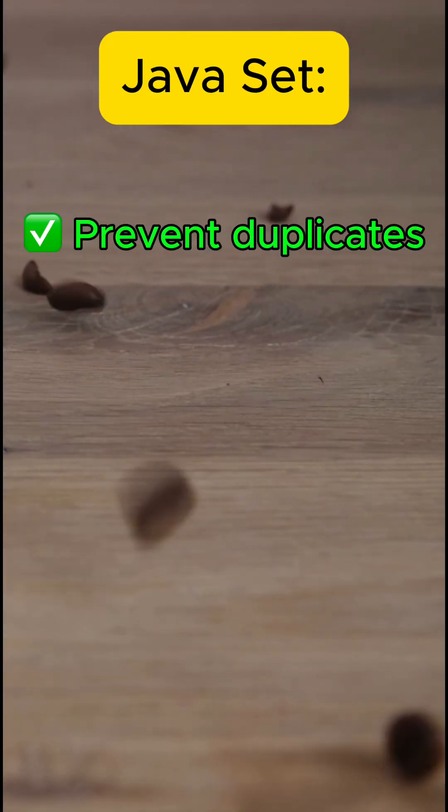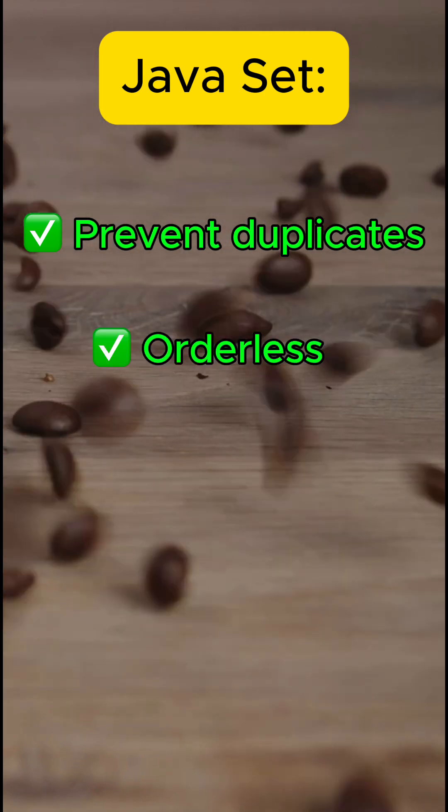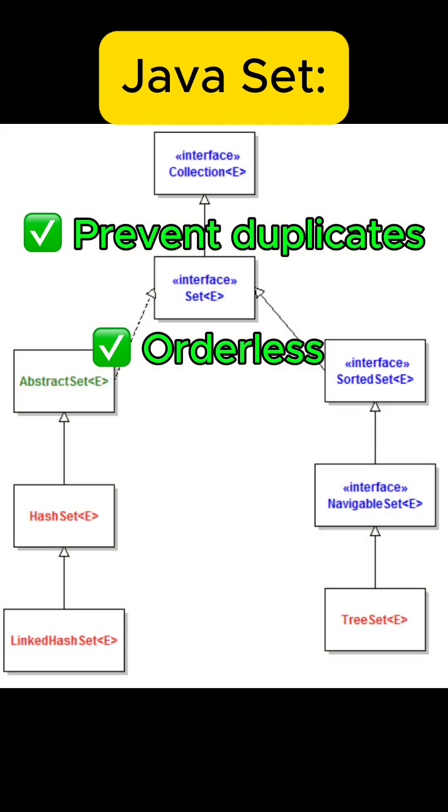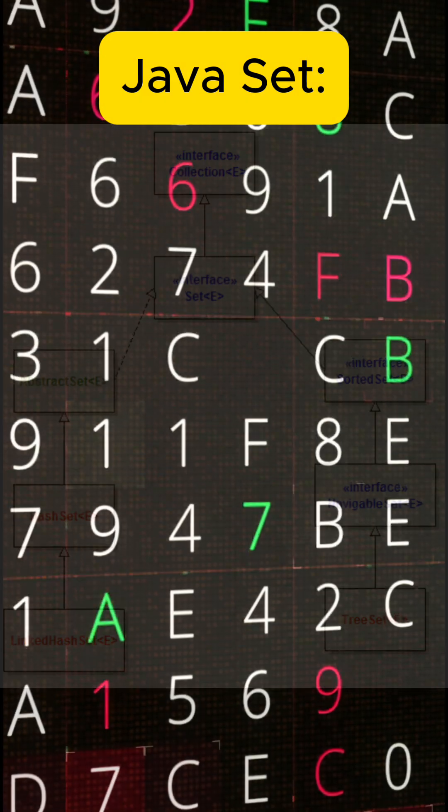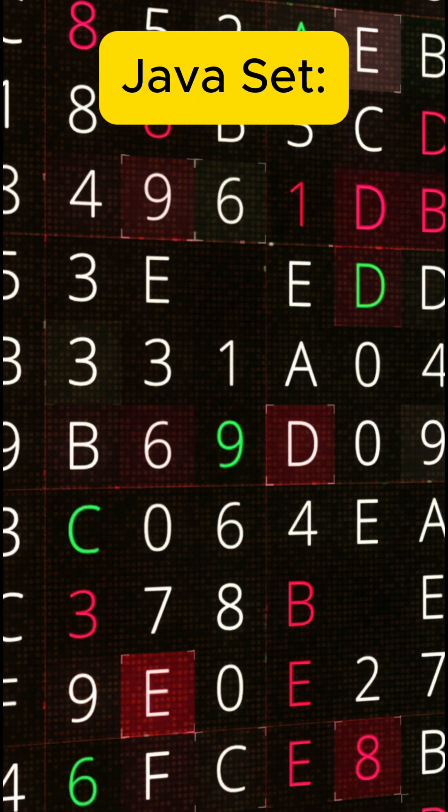Choose a set when you want to prevent duplicates and you don't care much about the order, unless you're using a specific set type like TreeSet or LinkedHashSet. Sets are perfect for unique items like user IDs or tags.